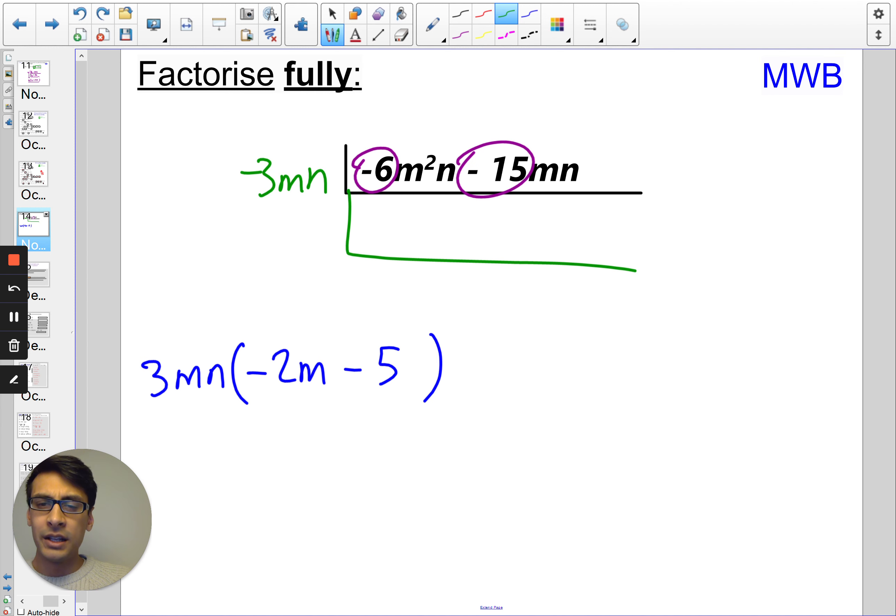And then in that case, I will end up with negative 3 times 2 is negative 6. Mn times m is m squared n. And then I have negative 3 times what is negative 15? Well, it's going to be positive 5. And mn is already there. So if I bring this down, I get negative 3mn brackets 2m plus 5.